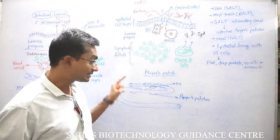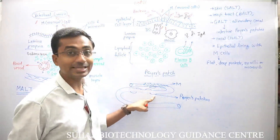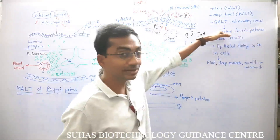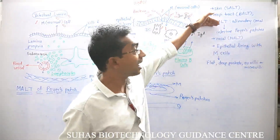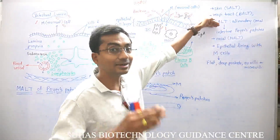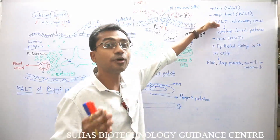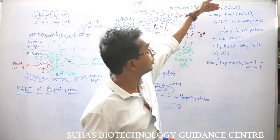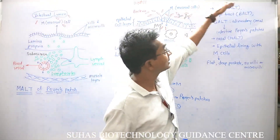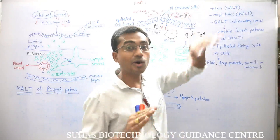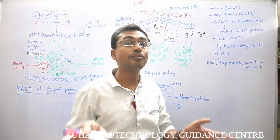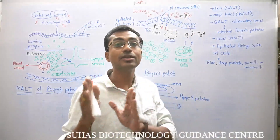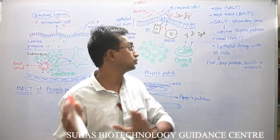The presence of such Peyer's patches is actually good, and it will be included under GALT, that is gut-associated lymphoid tissue. GALT, BALT, and SALT are all types of MALT — that is mucosa-associated lymphoid tissue.